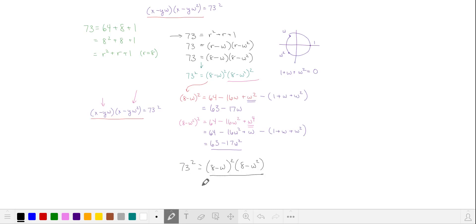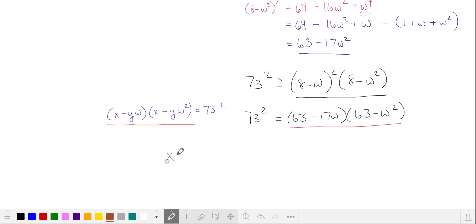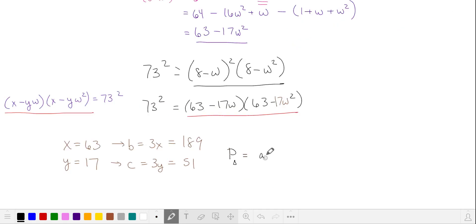Since 73² can be written like this, we'll make our substitution for our two factors. Comparing, we have x equals 63 and y equals 17. b was 3x or 189, c was 3y or 51. The perimeter of our triangle ABC is 459.